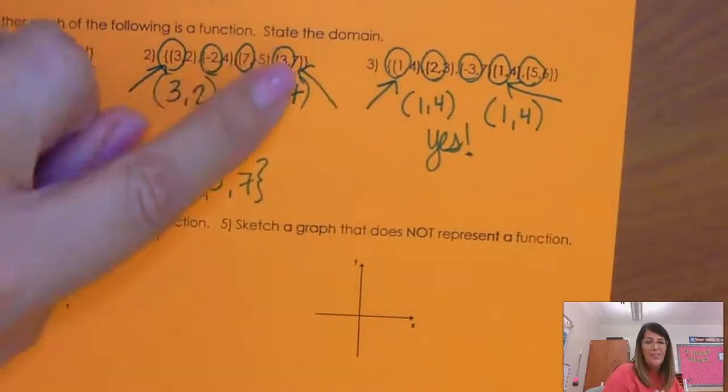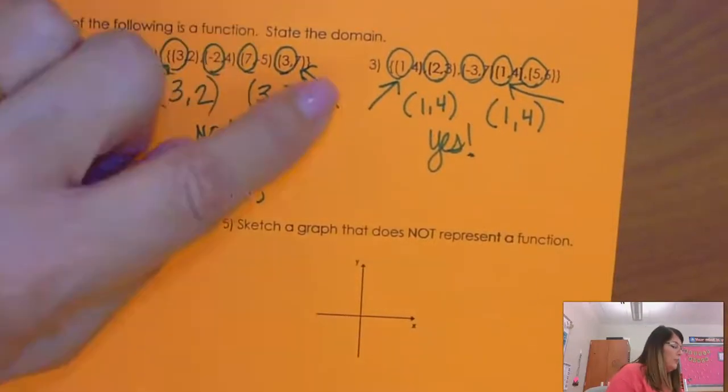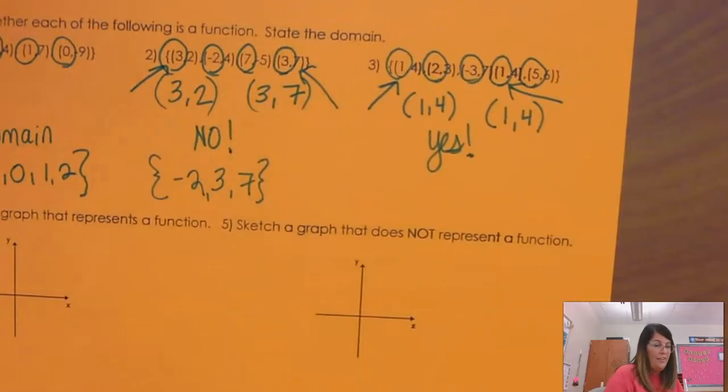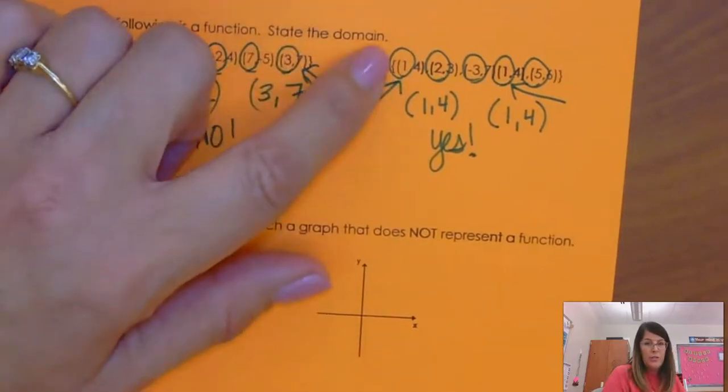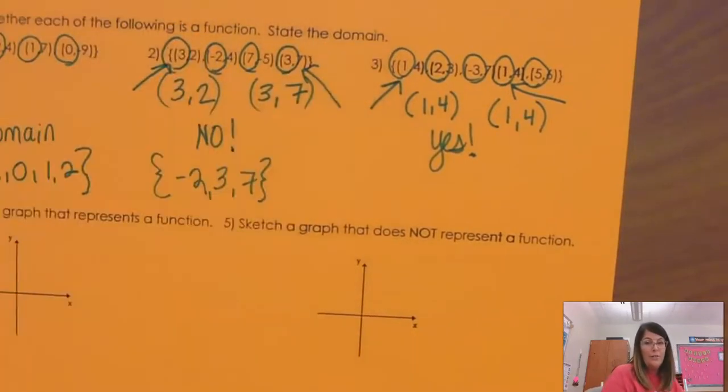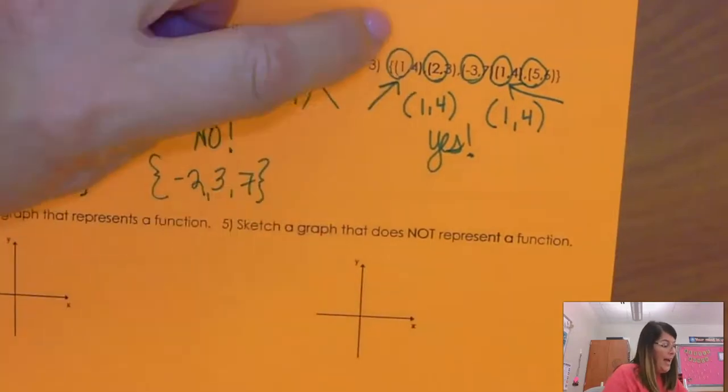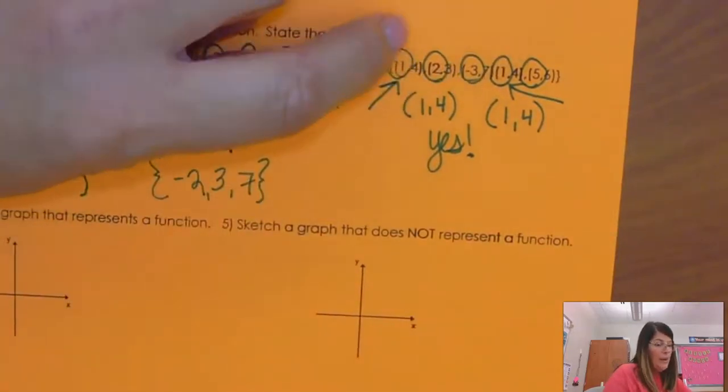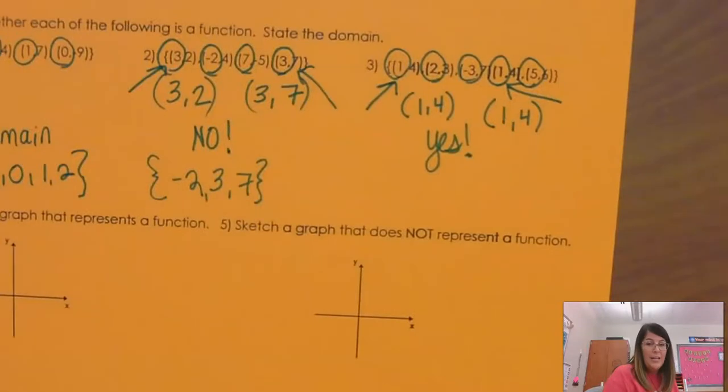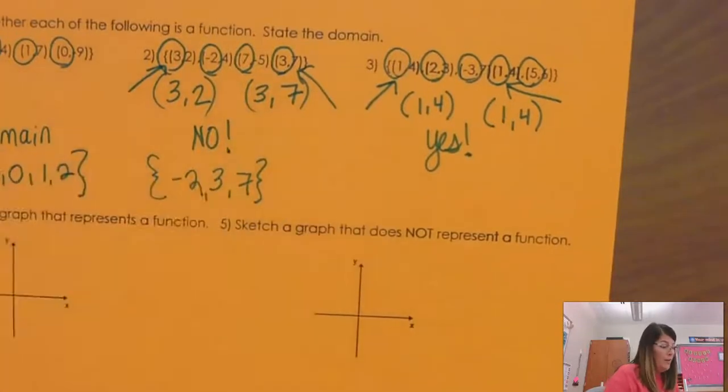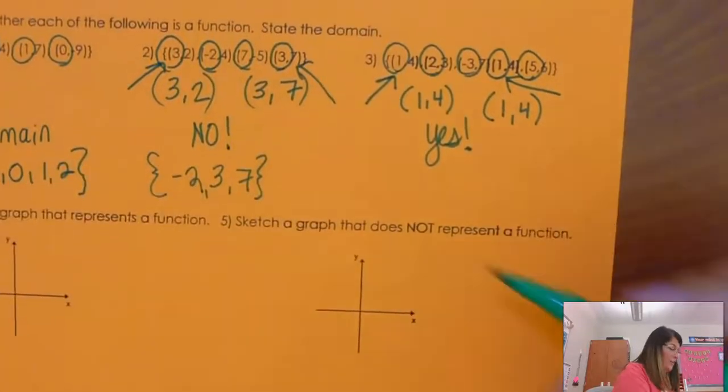This is totally still a function. So you can't just say, oh, the x's repeat, so it is a function, or it's not a function. You have to look closely. So your first thing you look at is do the x's repeat. But now, these x's repeat, but they still give me a unique y. So, therefore, I can say this is still a function.